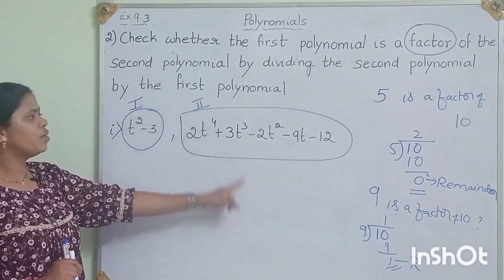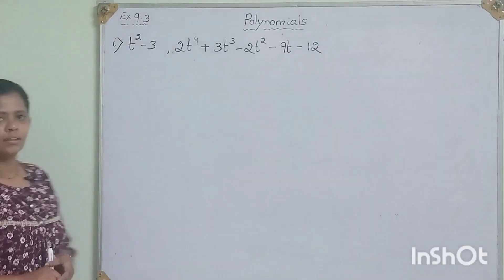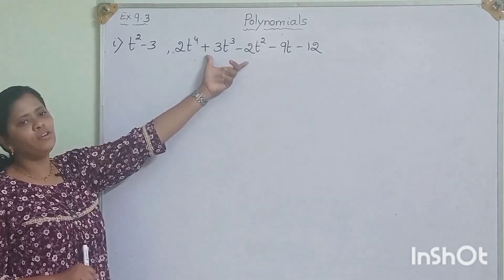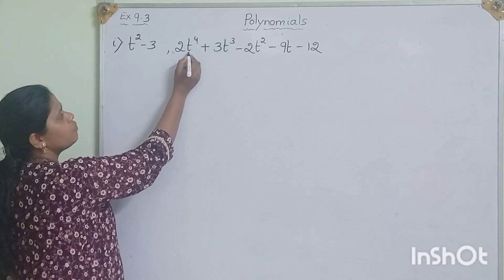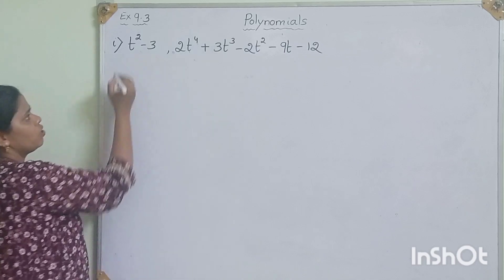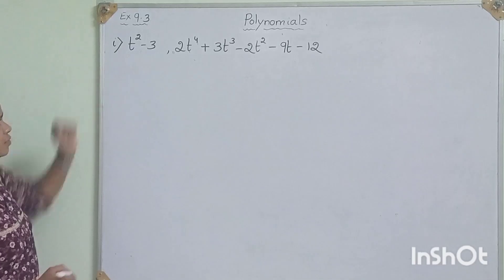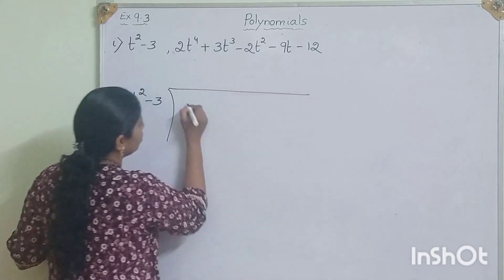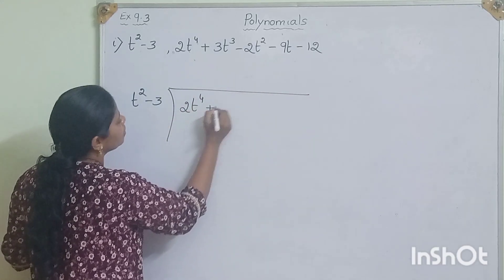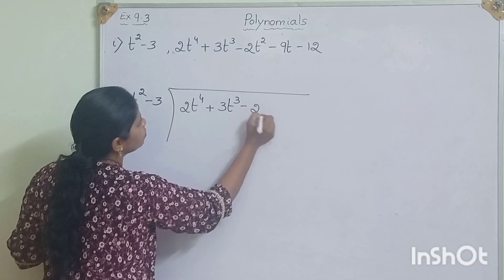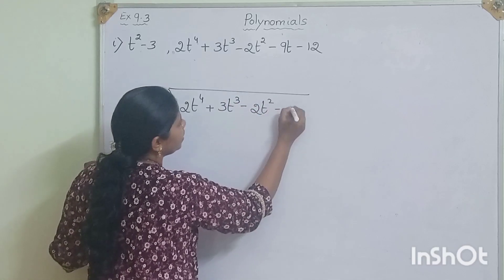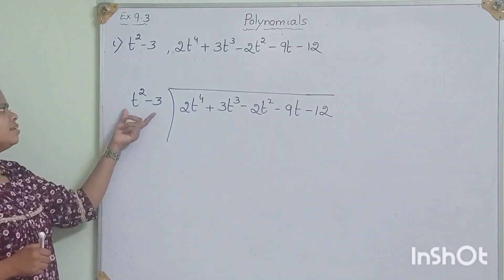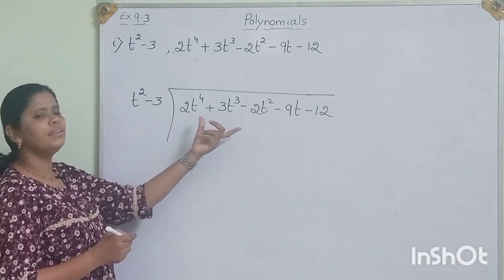Let us solve this. Now let us solve the first question. We have to divide the second polynomial by the first polynomial. This is our second polynomial and this is our first polynomial. We have to divide this one by this one. So: t squared minus 3 divides 2t to the power of 4 plus 3t cubed minus 2t squared minus 9t minus 12. This is the divisor and this is the dividend.